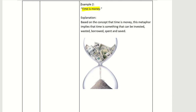How would you craft the answer to explain this metaphor? Based on the concept that time is money, this metaphor implies that time is something that can be invested, wasted, borrowed, spent, and saved. The highlighted explanation is for the metaphor 'time is money.'